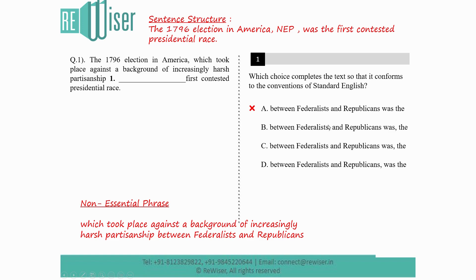Option B makes use of a comma between 'Federalists' and 'Republicans.' As we've seen, there are just two items in series, so no comma is needed between them. If there were three items — for example, Federalists, Republicans, and Democrats — then you would use commas. But since there are only two items in series, there is no need for the comma. Option B can be eliminated.